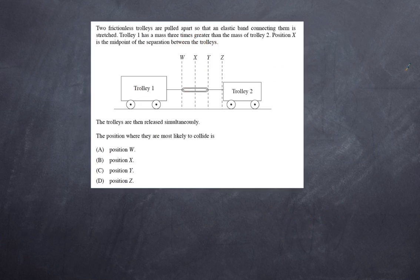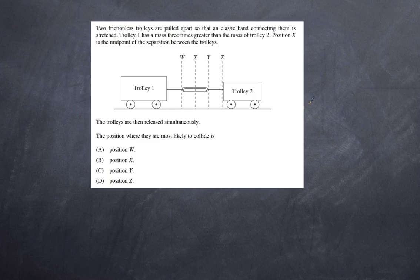A more difficult question: two frictionless trolleys are pulled apart so that an elastic band connected between them is stretched. Trolley 1 has a mass three times greater than the mass of trolley 2. Position X is the midpoint between the trolleys. Where are they most likely to meet — position W, X, Y, or Z? I'll give you a moment to work it out.